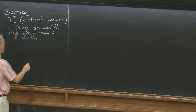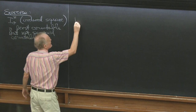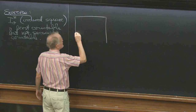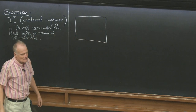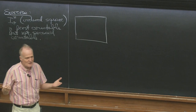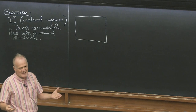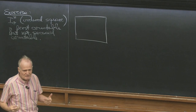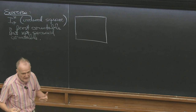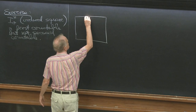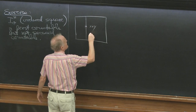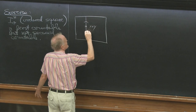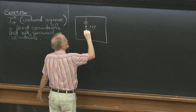Let's make a picture. We have the ordered square. What does first countable mean? First countable means in each point we have a countable family of neighborhoods such that every neighborhood contains one of these, if you want decreasing. So let's take a point here, x cross y, then it's clear what it is — these are the neighborhoods.